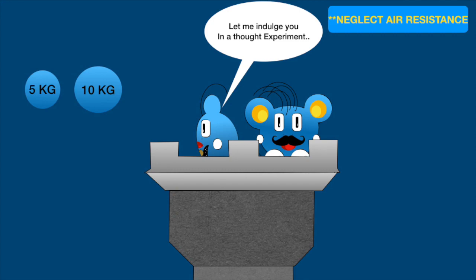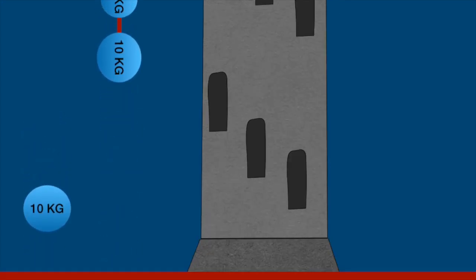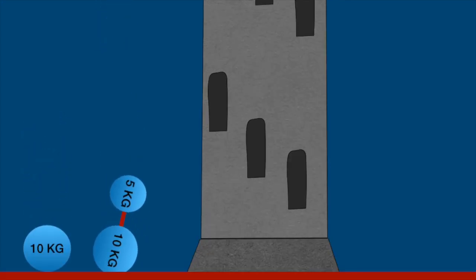Suppose you have an object having weight 5 kg and another object of weight 10 kg. You tie them together with a string. According to Aristotle, the heavier object will fall faster than the lighter one. But this time the string attached will pull the heavier object as it falls. So the system of 5 kg and 10 kg will fall at a slower rate than 10 kg alone.